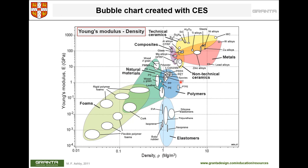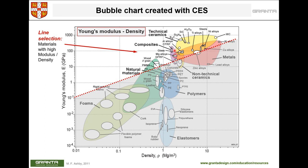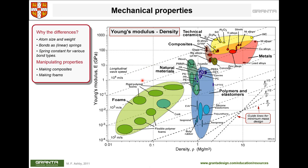Here is the same plot with individual materials shown within each category. If you want to select materials with high Young's modulus per density above a specific value, you draw a line — which is linear in logarithmic scale — and select all materials that fall above that line.